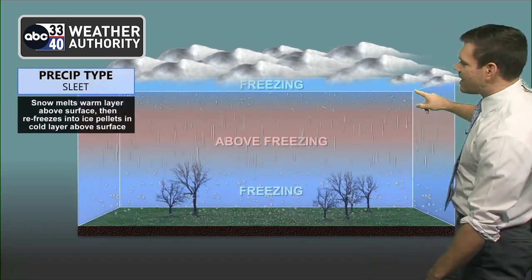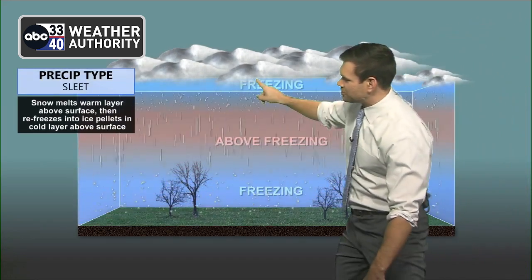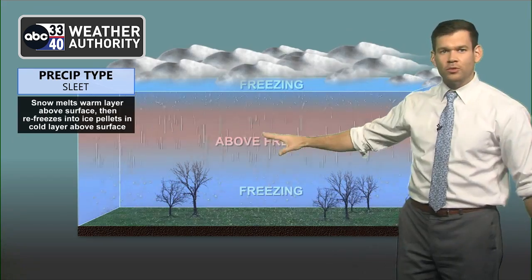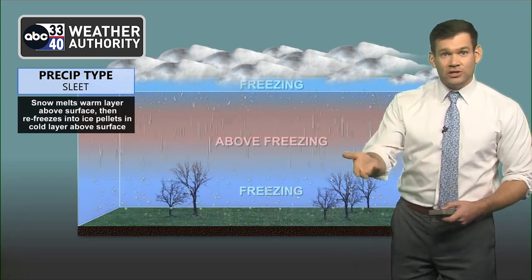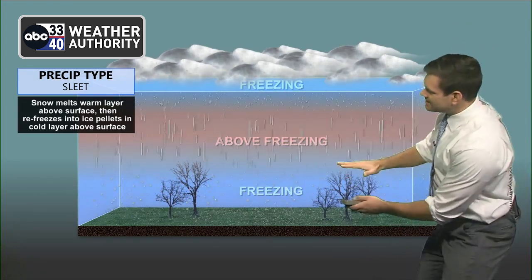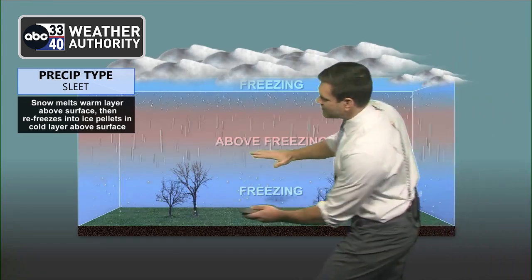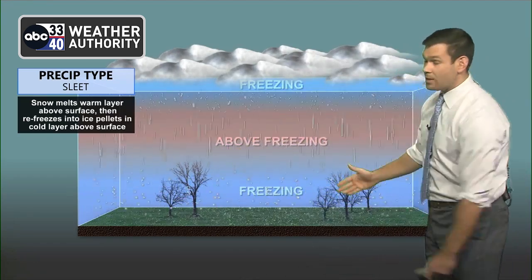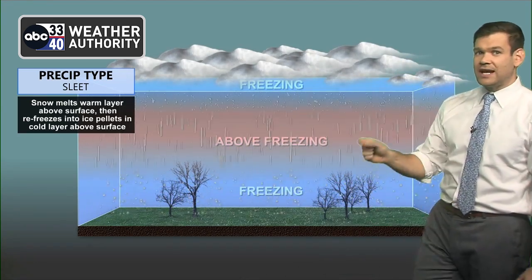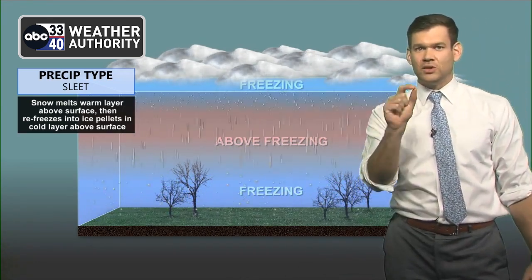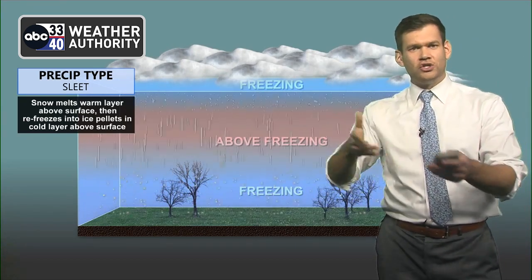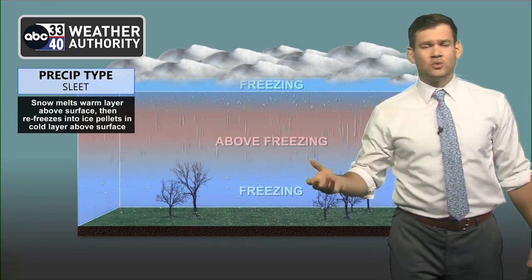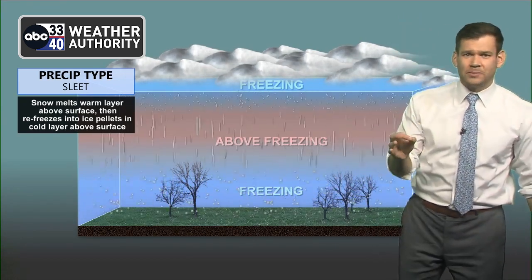Sleet is a little bit different. It starts at the base of the cloud as freezing precipitation, but then it falls through a warm layer. As it falls through that warm layer, it turns back into a droplet — it melts. But in this case, you have enough of a freezing layer above the surface that it actually refreezes. And that's why with sleet, you'll get these little pellets. They'll tend to bounce. You'll see those on your hood, your windshield, and they can accumulate as these little ice pellets.